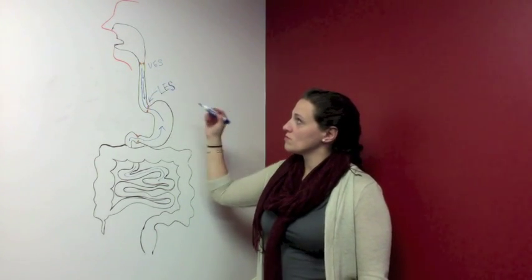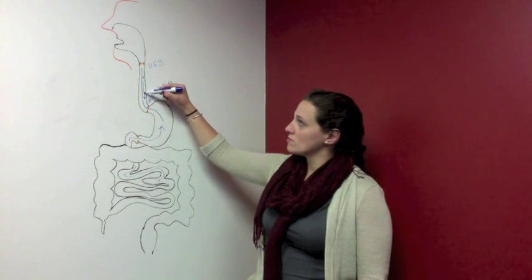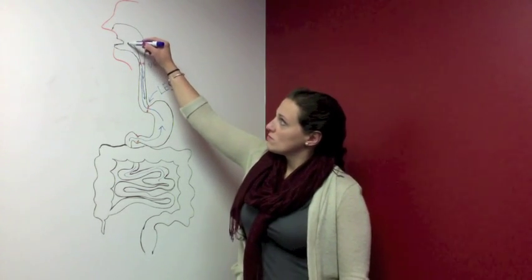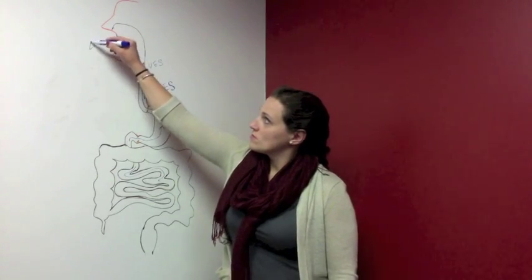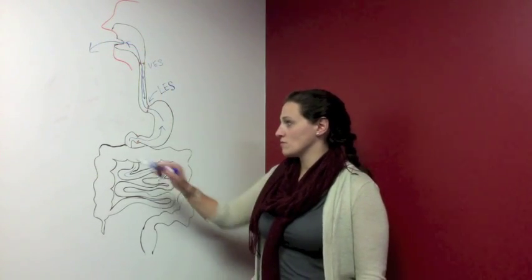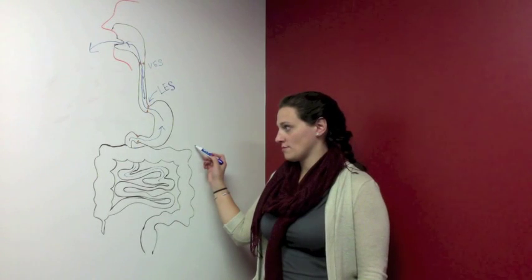If the pressure is great enough to open the UES, vomiting occurs. The action of vomiting is facilitated by contraction of the diaphragm and abdominal muscles against a closed pyloric sphincter.